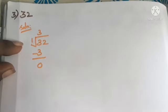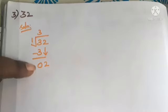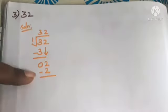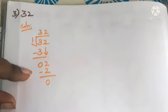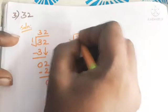Third problem: find the factors of 32. Divide 32 by 1 first. In the tens place, 3 ones are 3; 3 minus 3 is 0. Bring down 2; 2 ones are 2; 2 minus 2 is 0. Remainder is 0, so 1 and 32 are factors of 32.